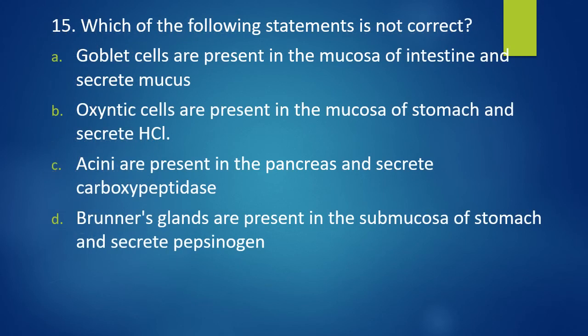Question 15. Which of the following statements is not correct? Goblet cells are present in the mucosa of the intestine and secrete mucus. Oxyntic cells are present in the mucosa of the stomach and secrete HCL. Acini is present in the pancreas and secrete carboxypeptidases. Brunner's gland is present in submucosa of the stomach and secrete pepsinogen. Which of the following statements is not correct? The answer is option D is not correct. Brunner's gland is a submucosal gland but it is present in duodenum and not in stomach.